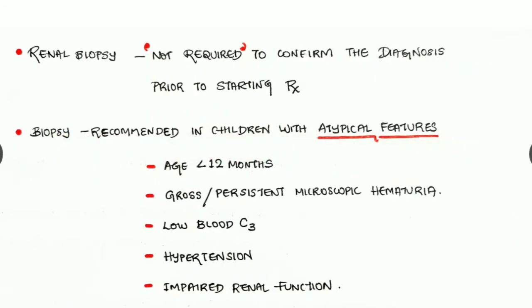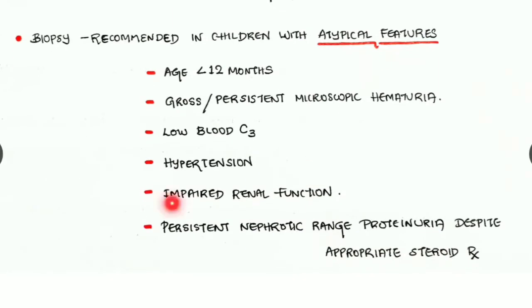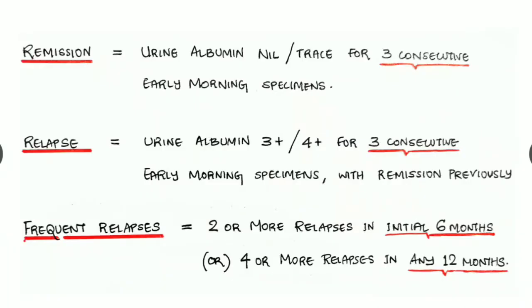Biopsy is recommended in children with atypical features: age less than 12 months, gross hematuria or persistent microscopic hematuria, low serum complement C3 levels, hypertension with nephrotic syndrome (usually a glomerulonephritic sign), impaired renal function, or persisting nephrotic-range proteinuria despite appropriate steroid therapy. If these atypical features are present, a biopsy must be performed.